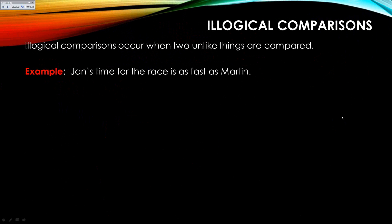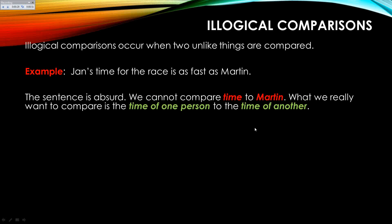The last thing is illogical comparisons — this is one that they test most often on the SAT. Here's the example: Jan's time for the race is as fast as Martin. This sentence is saying the time is as fast as Martin. This is absurd — you cannot compare time to a human being. We can fix that several different ways, but you just need to identify that it is an error and they'll probably give you a way to fix it.